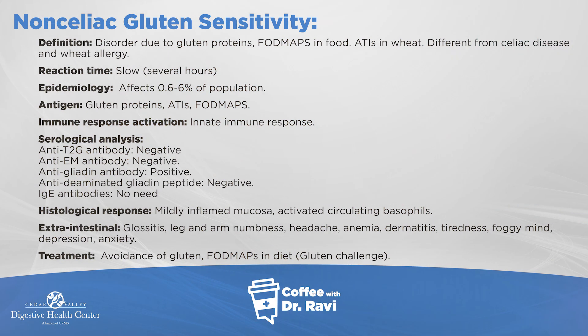The second group of problems is a condition called non-celiac gluten sensitivity. We are learning more about this as we study it, so it's not celiac disease, but it is a condition where the immune system, to a lesser level, starts causing problems by attacking certain proteins in wheat. Occasionally a blood test called gliadin can be positive, but it's more a diagnosis made based on symptom correlation.